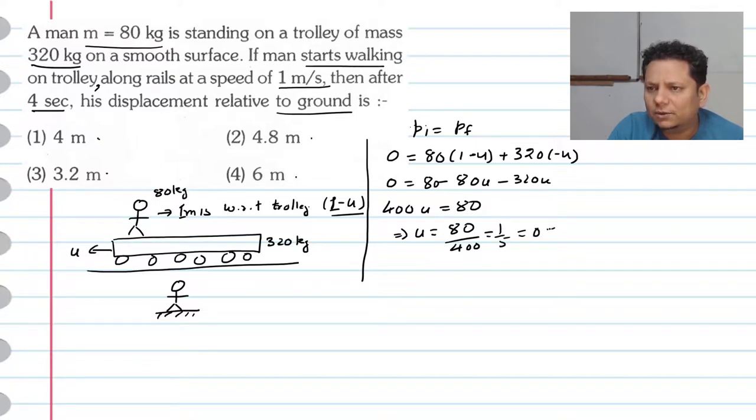This equals 0.2 meter per second. So this is the trolley's speed with respect to ground.